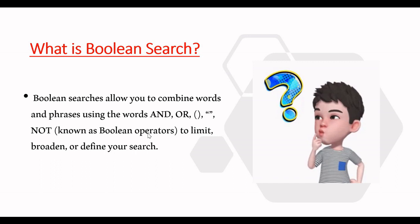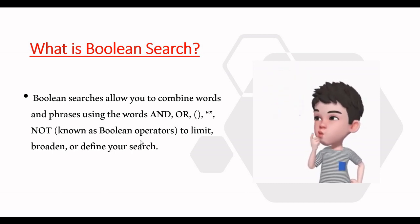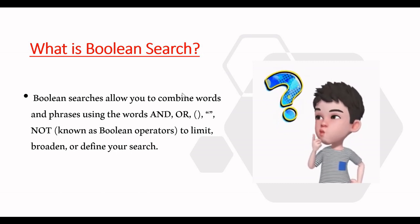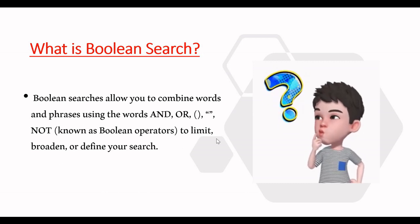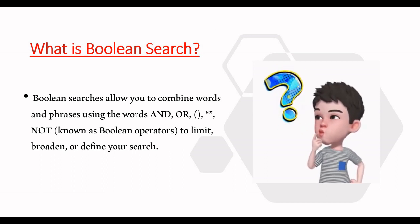There are five boolean operators, but most commonly we use only three: AND, OR, and NOT. With the help of boolean operators, boolean search allows us to combine words and phrases and find relevant resumes, limit resumes, or broaden our search. This boolean search helps us save time, since the limited resumes returned are exactly relevant as per our requirement.